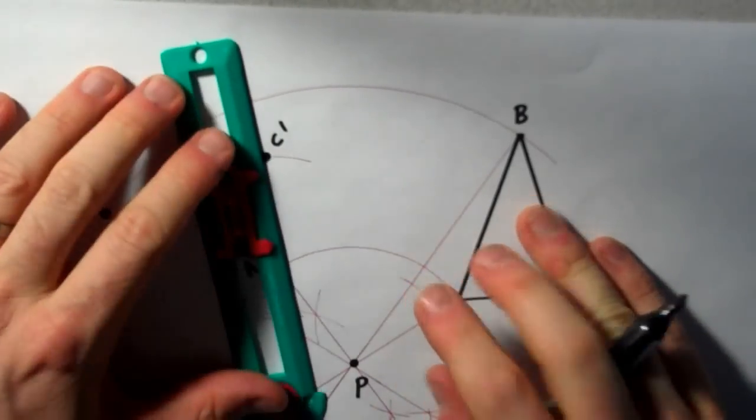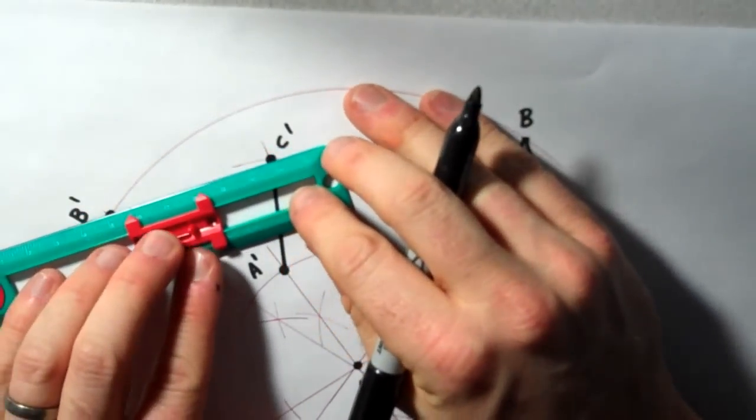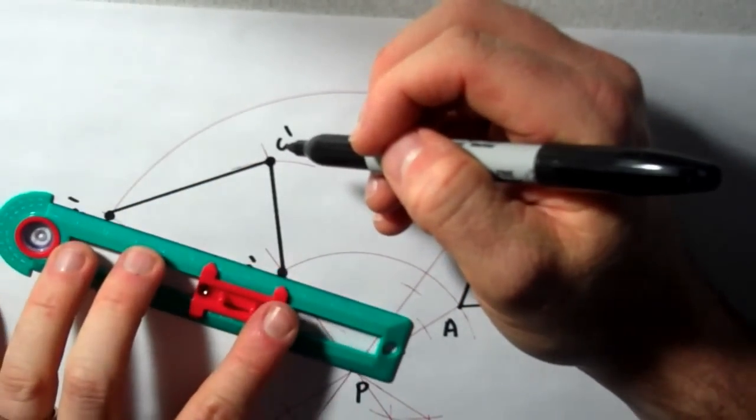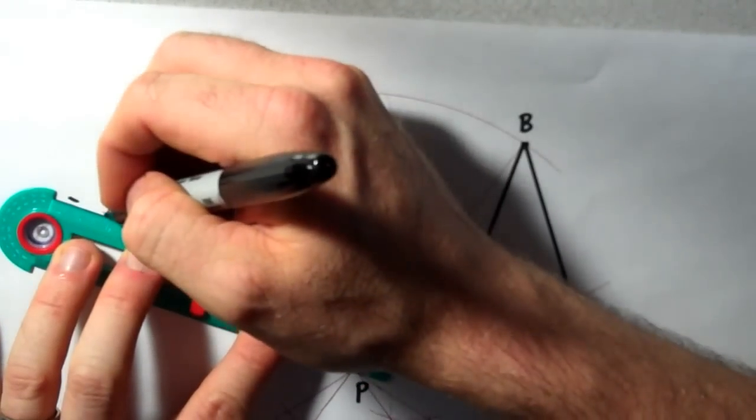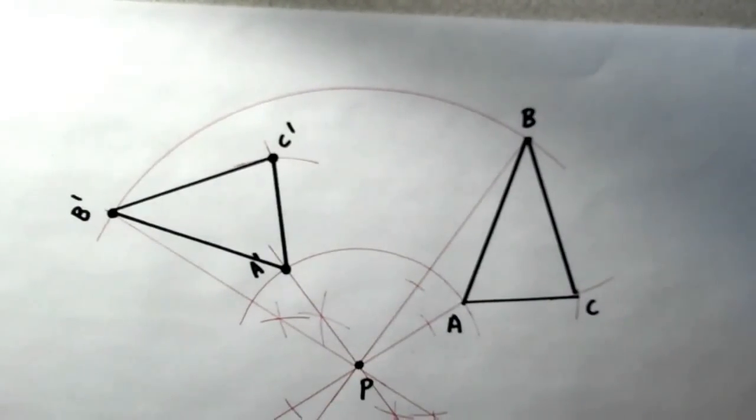So now all I have to do is connect my points. And there you have it. A rotated triangle ABC about point P, 90 degrees in the positive direction.